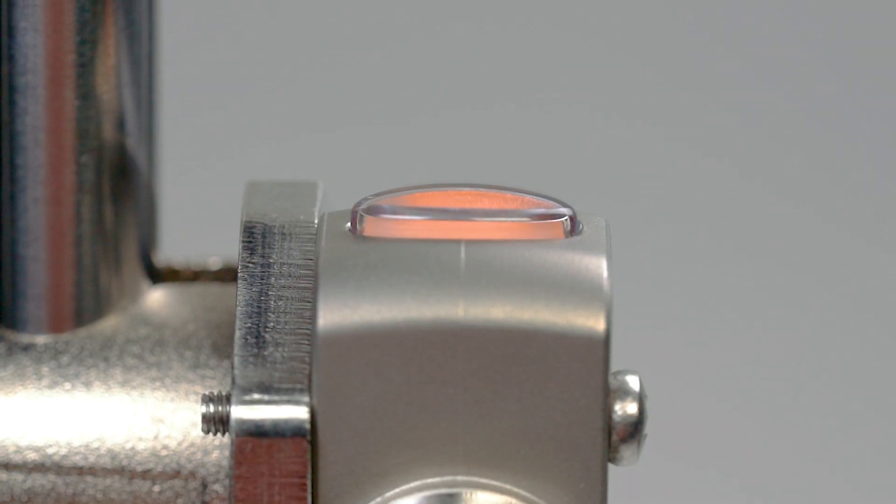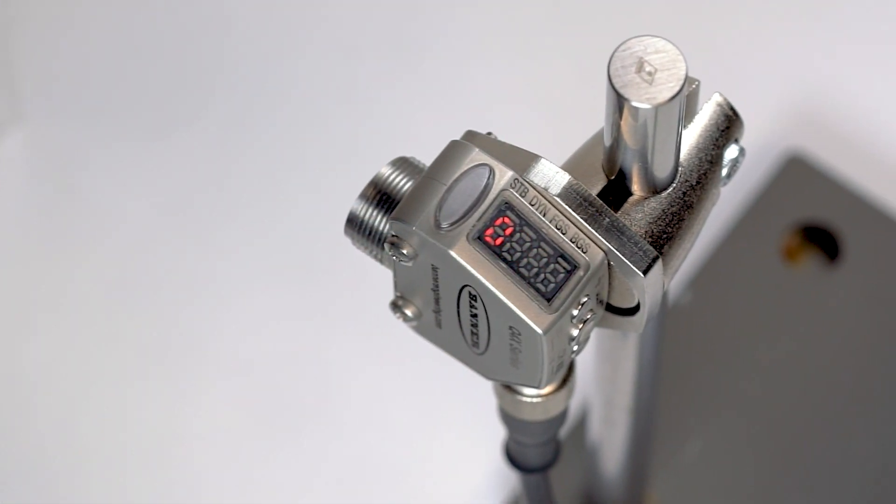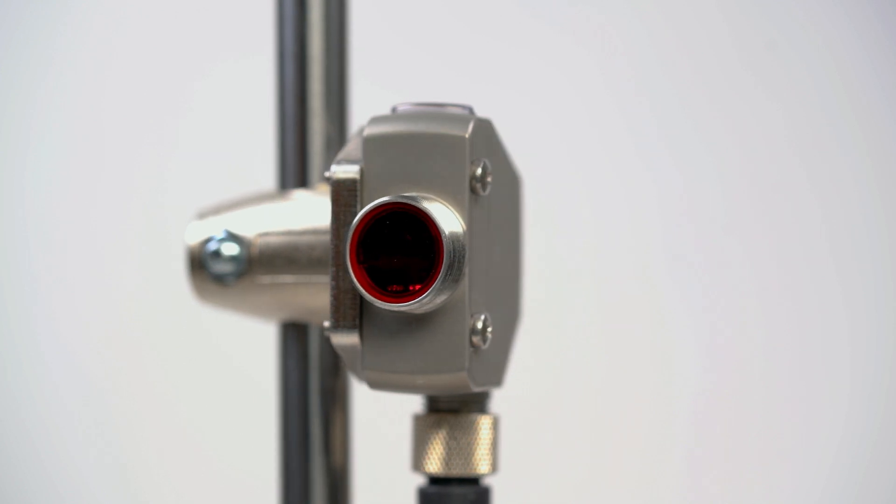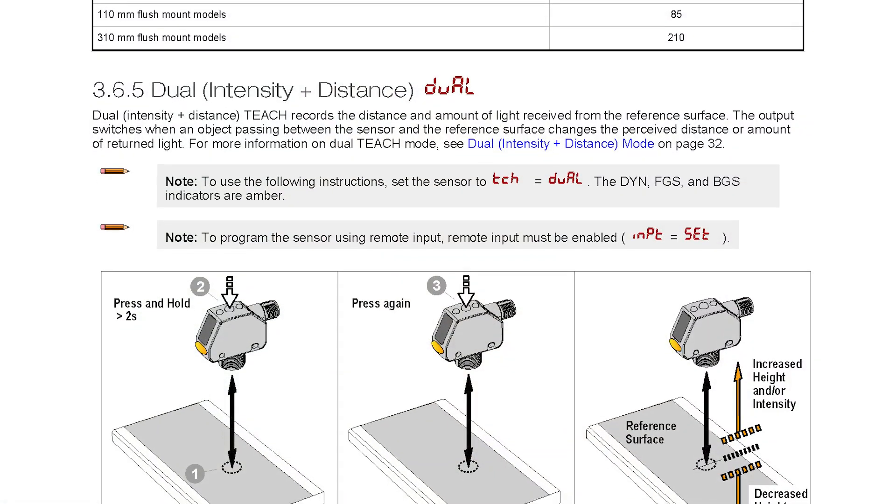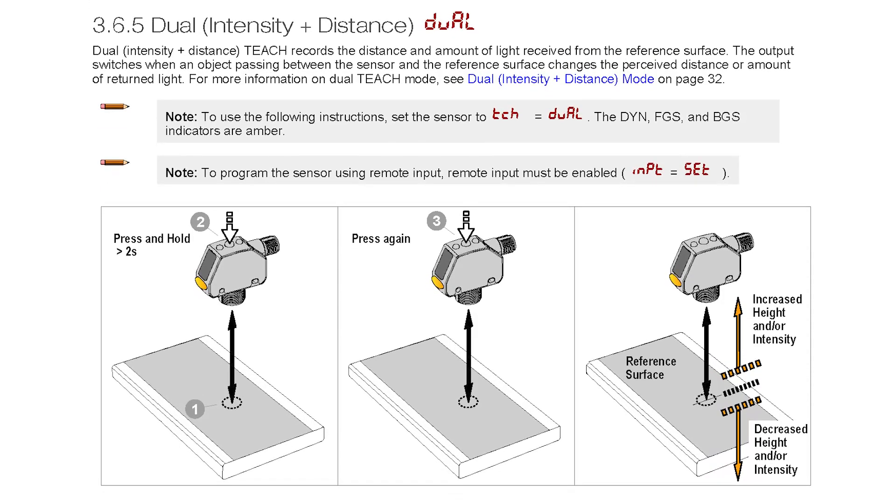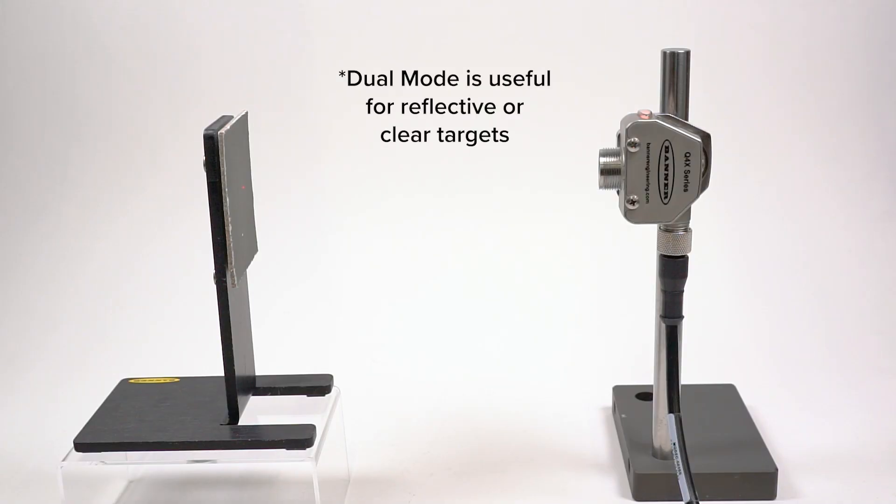This is a short how-to video that will cover the basics of setting up the dual mode for the Q4X laser measurement sensor from Banner Engineering. Dual mode simultaneously measures for changes in both distance and returned light intensity with respect to a fixed reference background.